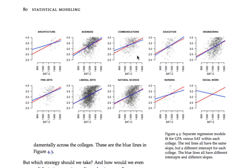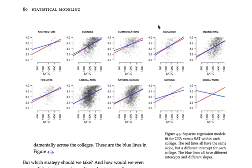The y-axes and x-axes are the same in each plot, and each dot within each panel corresponds to a student in that specific college. There are two sets of lines — blue and red. Let's focus on the blue lines first; they're a lot easier to understand. All we've done to fit the blue lines is to fit a separate least squares line to each subset of the data implied by all 10 undergraduate colleges — treating architecture, business, communications, education, engineering, all the way down to social work, each as its own independent data set.